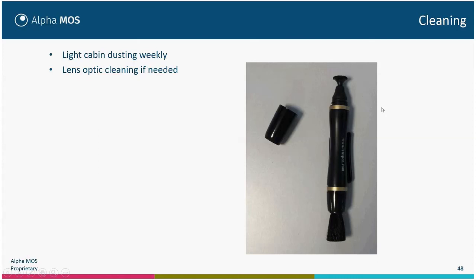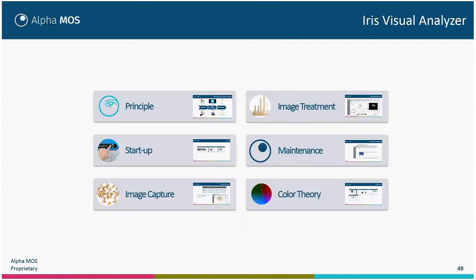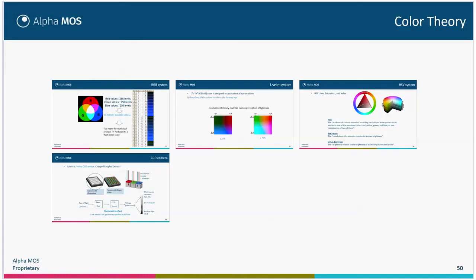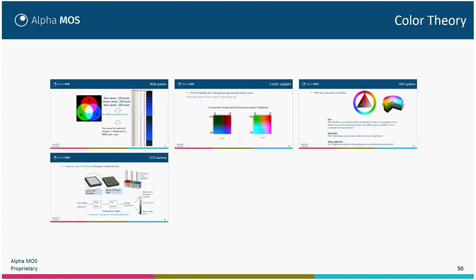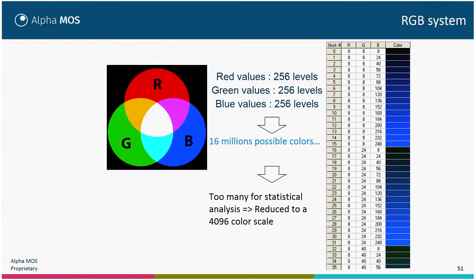I will now talk about color theory. The RGB system uses red, green, and blue values with 256 levels each, giving 16 million possibilities. In our system, we have gathered each level of red, green, and blue into 8 different levels, giving a specific color. That means there are 4,096 different colors in our color scale.